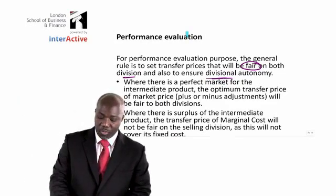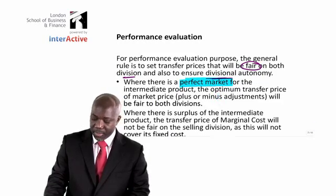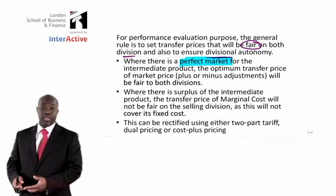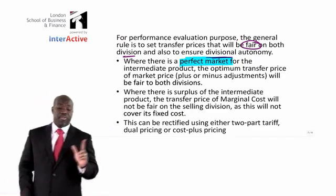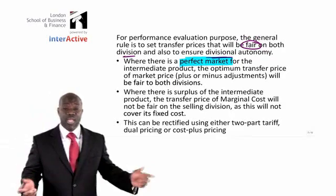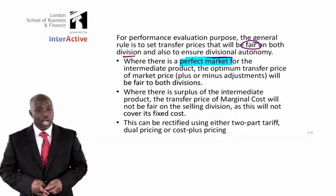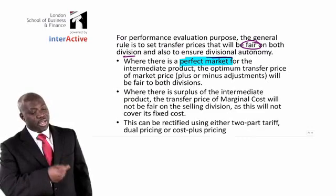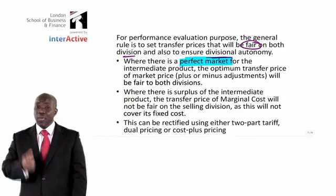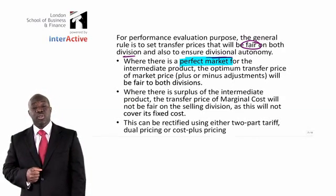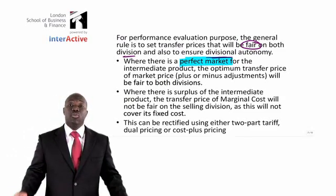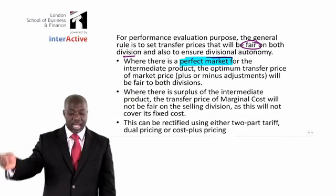In the first scenario, if we have a perfect market, the best transfer price will be at market price plus or minus any adjustments. Will this be fair to both parties? Yes, it will be fair to both parties. Will market price plus or minus any adjustment also ensure divisional autonomy? Yes, that will also ensure divisional autonomy. So in the situation where we have a perfect market, the best transfer price is at market price plus or minus any adjustments.